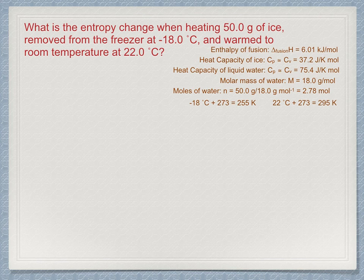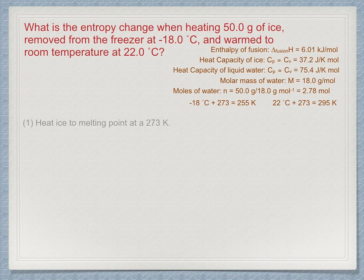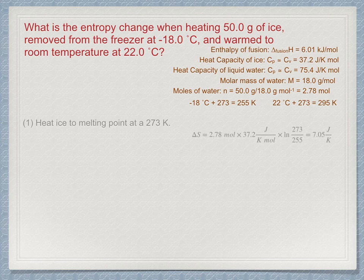Now we can solve this problem in three steps using the general equations we developed earlier. First, heat the ice to its melting point which we know is 273 Kelvin. 2.78 moles times 37.2 joules per Kelvin mole times ln of 273 over 255 is 7.05 joules per Kelvin.